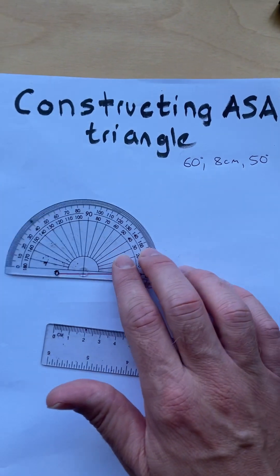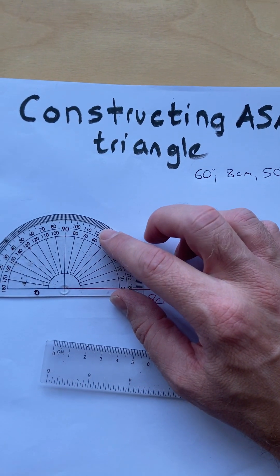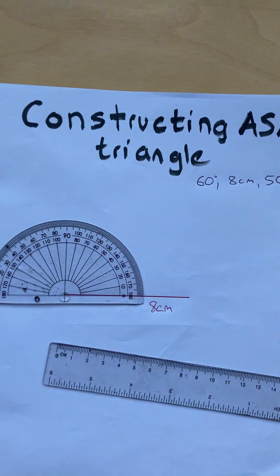Then go to the left-hand side, use your protractor, line it up. Have a look at my short on protractor use if you need. Measure that to 60.